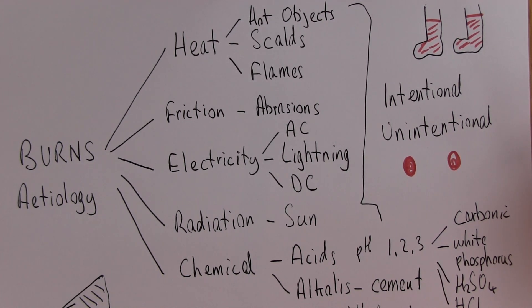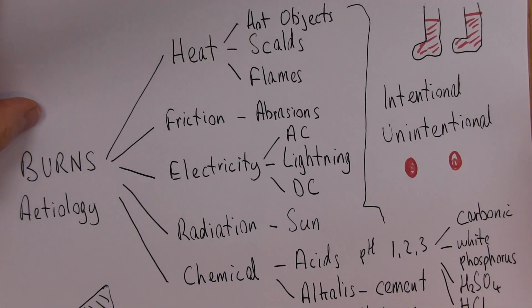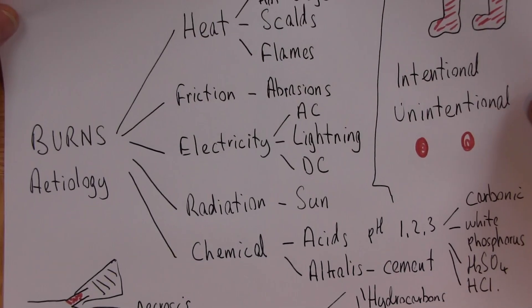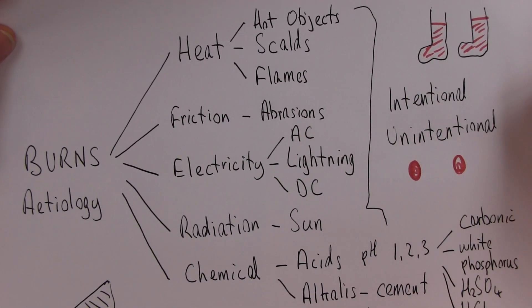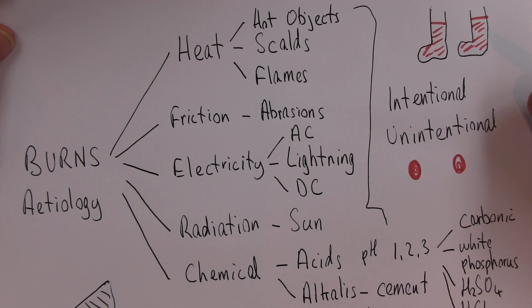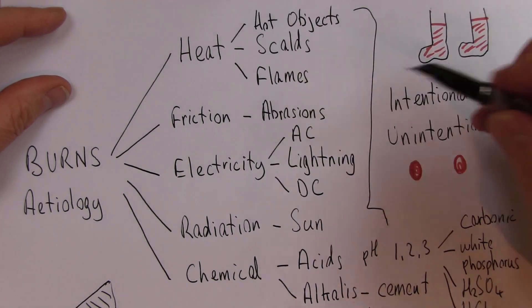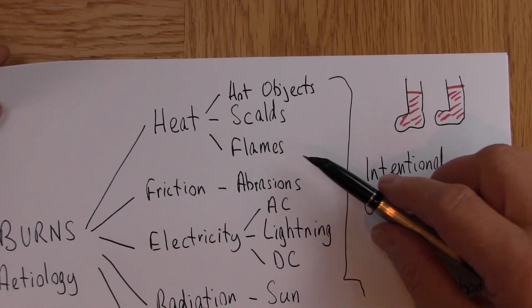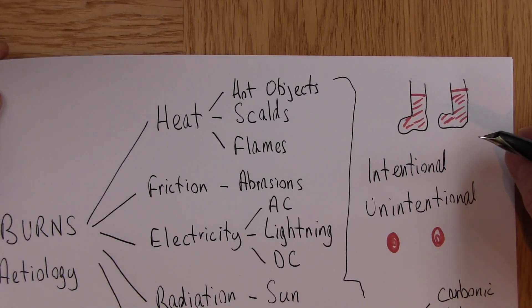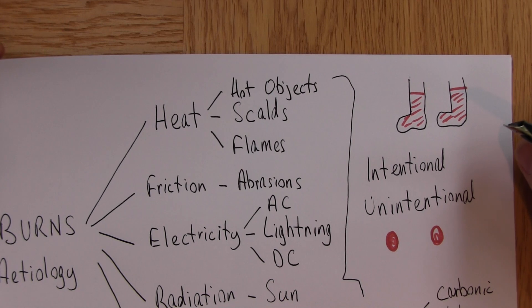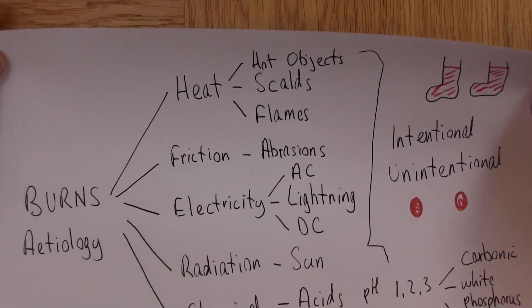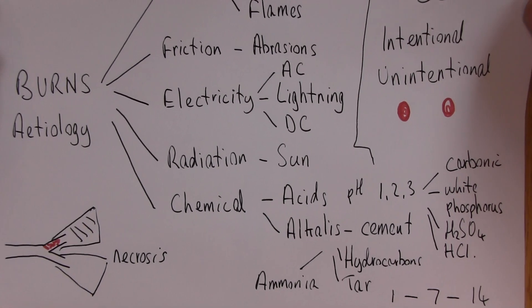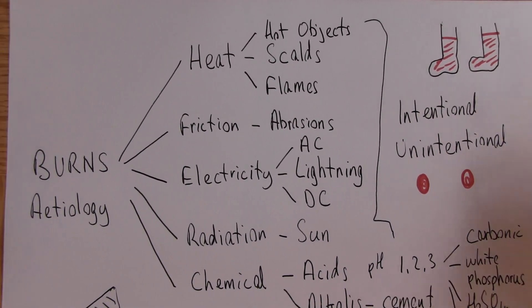Always think about risk groups: children, the elderly. Two big risk groups for all forms of burns are alcohol users — a large proportion of people who come into A&E with burns have been using alcohol — and smokers, for the direct flames effect.